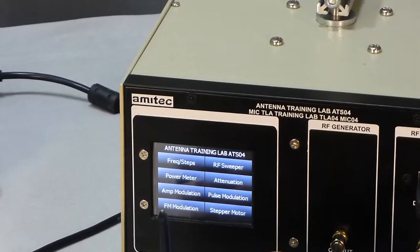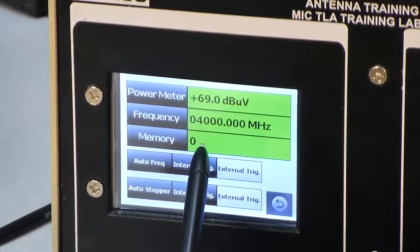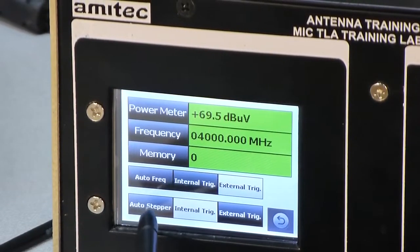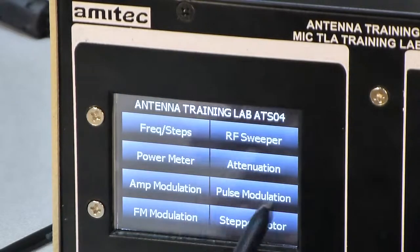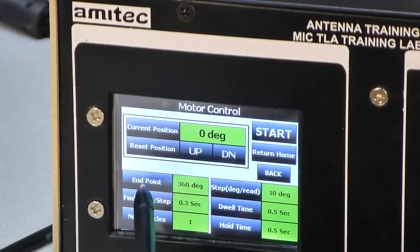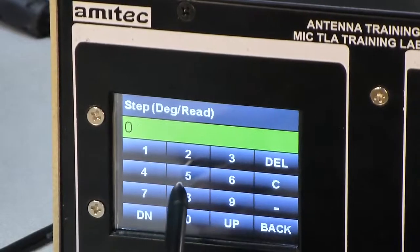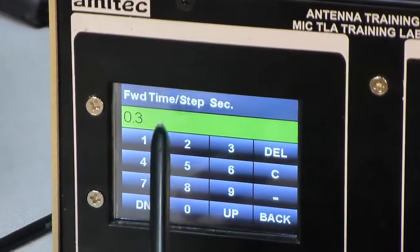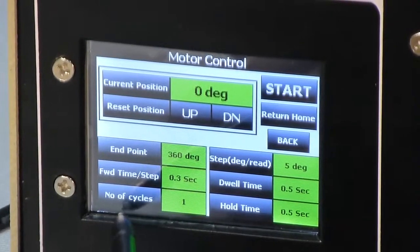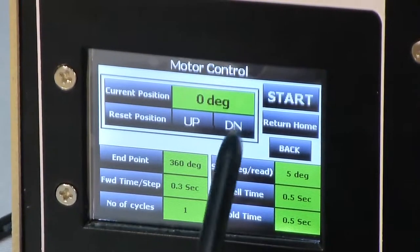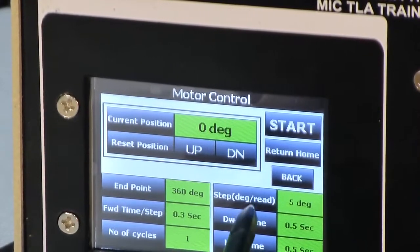For taking the polar plot of an antenna, you can see the current memory location is 0 that means no plot has been taken earlier on this instrument. So we set for internal trigger and also activated the option for auto stepper. Now when stepper will start, end point is 360 degrees, step size is 10 degrees, we change the step size to 5 degrees. Forward time is 0.3 seconds. Then dwell time is 0.5 seconds. Number of cycle is 1, hold time is 0.5 seconds. If you press the start button, motor will start rotating in clockwise direction from 0 degree to 360 degrees with the step size of 5 degrees.